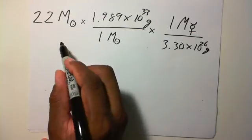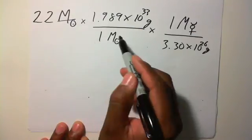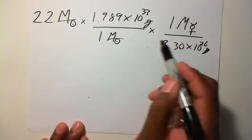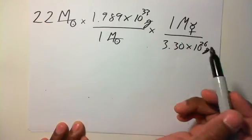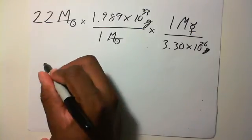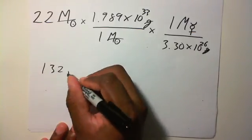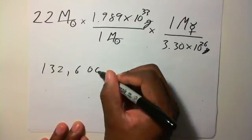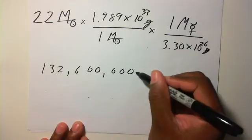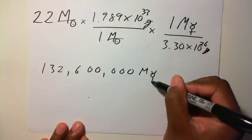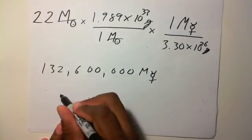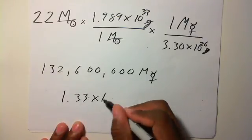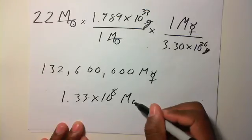Now you see how everything cancels out? This solar mass cancels out with this solar mass. This gram cancels out with this gram. And we're left with just the mercury masses. The answer is 132,600,000 mercury masses, or in scientific notation, 1.33 times 10 to the 8 mercury masses.